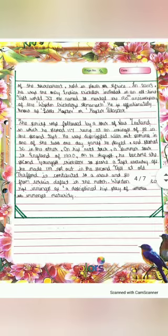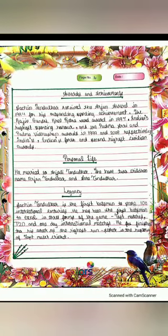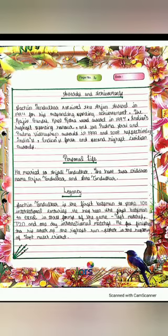Awards and achievements. Sachin Tendulkar received the Arjuna Award in 1994 for his outstanding sporting achievement, the Rajiv Gandhi Khel Ratna Award in 1997, India's highest sporting honor, and the Padma Shri and Padma Vibhushan awards in 1999 and 2008, India's fourth and second highest civilian awards respectively.